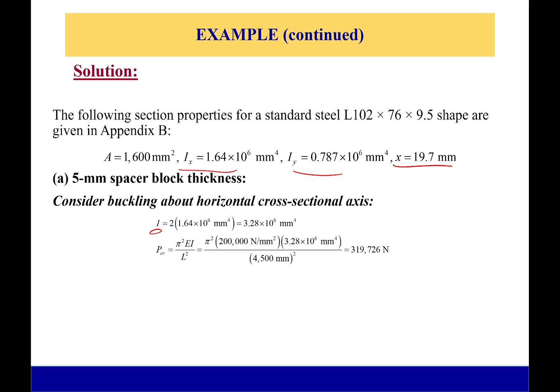So this one's really easy. I don't really have to do too much here. I know the moment of inertia is just twice the moment of inertia for one L block because I got two of them. I know the modulus of elasticity is given, and I know my length. It's all given, so I get 319,726 newtons. That one was pretty easy – it was just plug and chug.